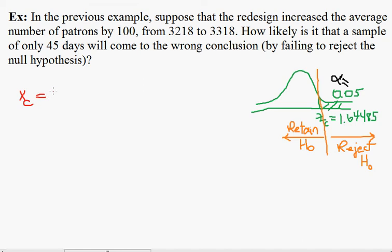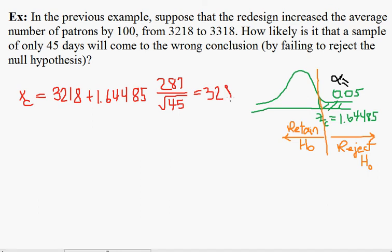So the x critical we get by unconverting from standard units. So it used to be that the critical value was 3218 plus 1.64485 times the size of a standard error. The standard deviation was given to be 287 divided by the square root of n, which was square root of 45. So doing the arithmetic, which I encourage you to try on your own, we get 3288.372.